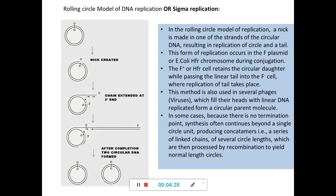This usually occurs in the case of the F-plasmid or in E. coli HFR chromosome during conjugation, and can also be seen in certain phages and viruses. Let's go into the details of the mechanism, as it's not quite evident from this picture.